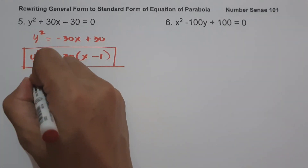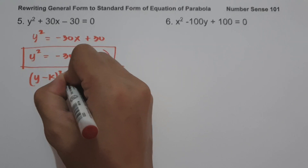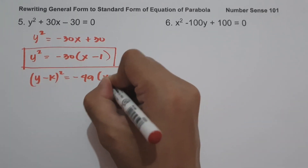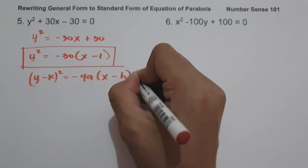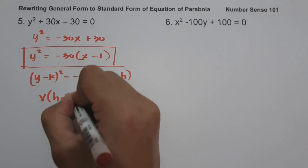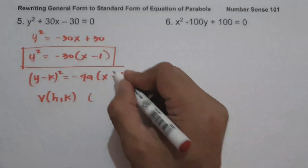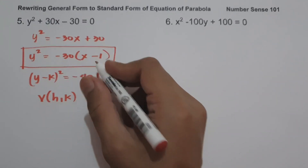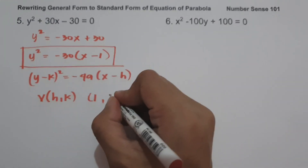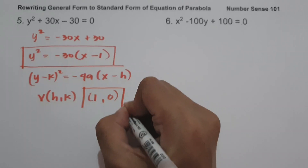This is written in the form (y - k)² = -4a(x - h). Our vertex (h, k): h is +1 and since we don't have k, k is 0. So the vertex is (1, 0).